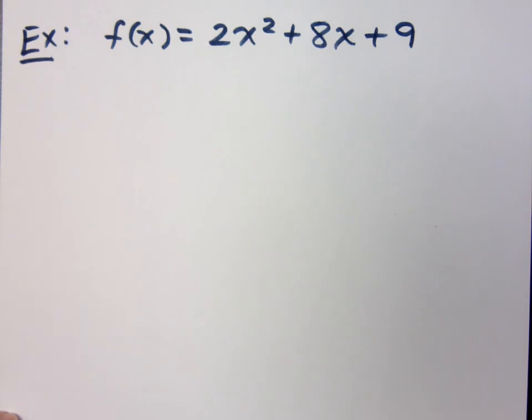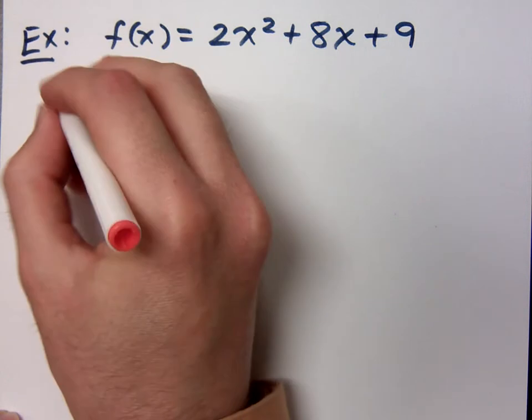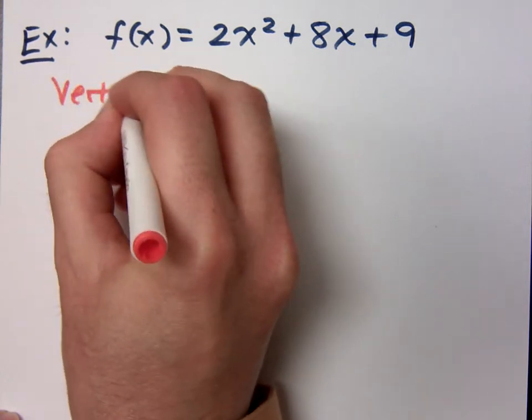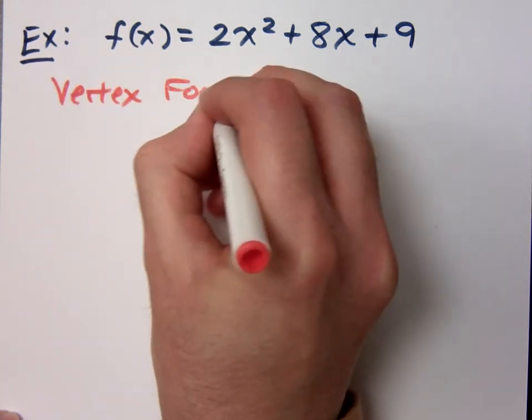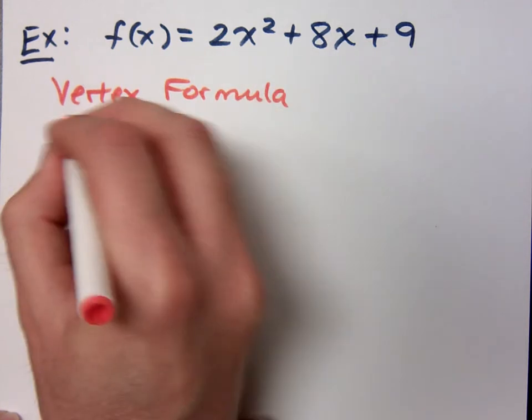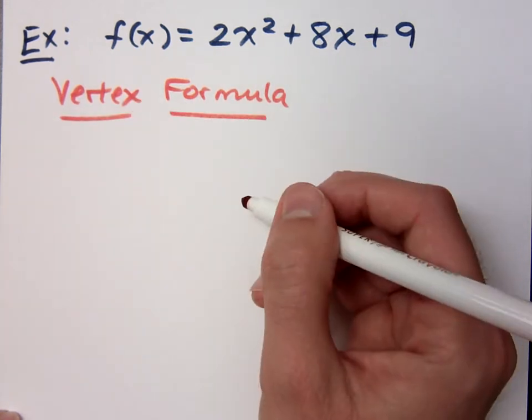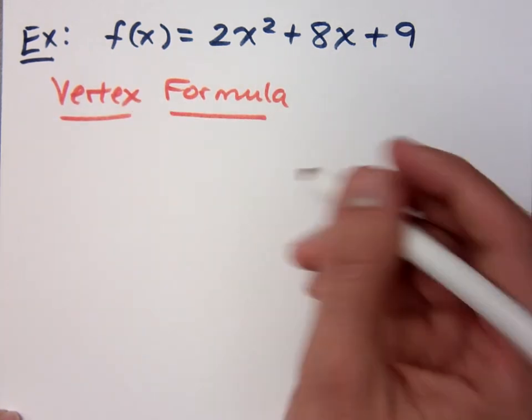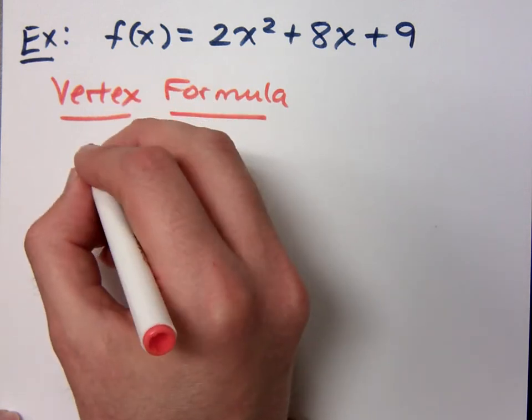No, we have a couple of ways for getting this. I'm going to show you both ways. One of the things I want you to know is the vertex formula. So when you have just a normal quadratic guy that's not in that vertex form, your vertex formula is given by this.